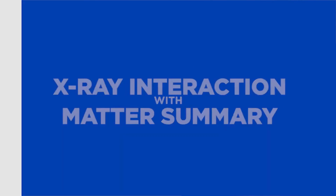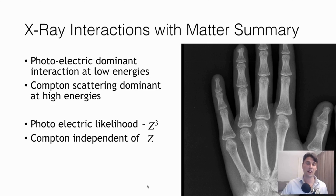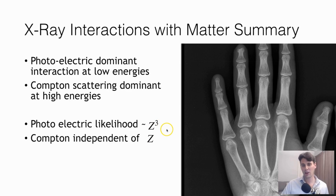To summarize: photoelectric dominates interactions at low energies, Compton dominates at high energies. The likelihood of photoelectric interaction is dependent on Z cubed, and for Compton it's dependent on Z. This tells us that X-ray imaging will give really good contrast for higher-Z materials like bone — bone imaging on standard X-rays comes out really nice with fine contrast. Thanks for sticking around, and we'll see you in the next one. This was a summary on X-ray interactions with matter.